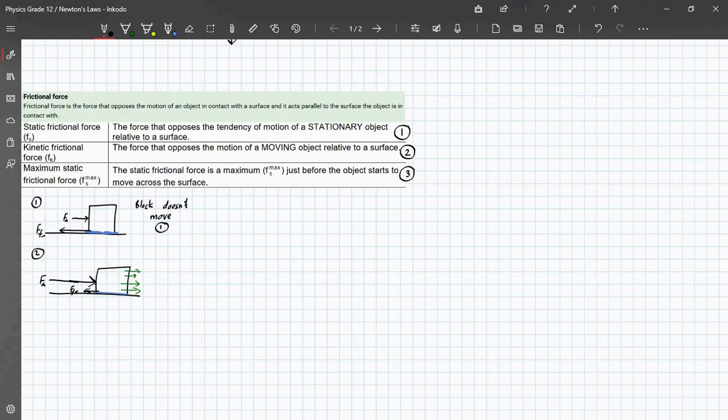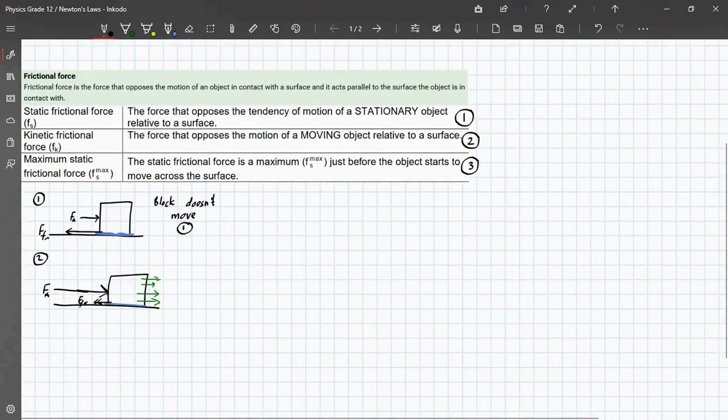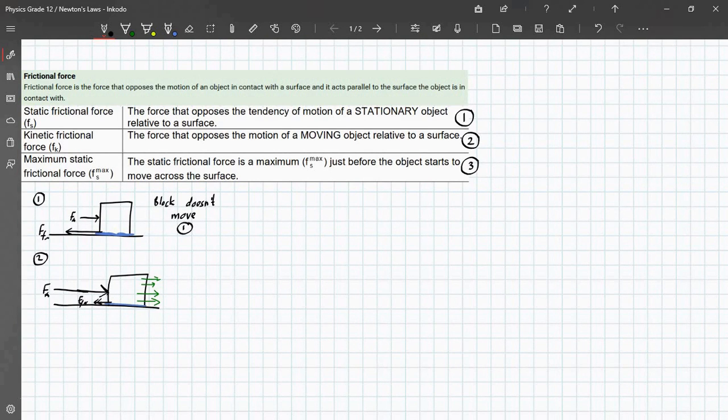Maximum static frictional force. So, the static frictional force is a maximum just before the object starts to move across the surface. So, what this basically means is, it is the maximum force that you can apply to an object before the object starts to move. That is what's known as maximum frictional force. It's the same as static frictional force, except this is the maximum.